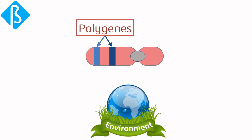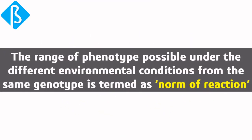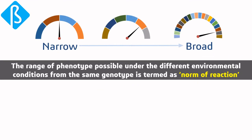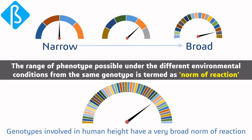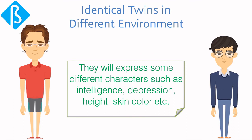The expression of polygenes is greatly influenced by environmental conditions. Genes function differently in different environments because the environment regulates the activity of certain genes, setting them on or off. The range of phenotypes possible from the same genotype under different environmental conditions is termed the norm of reaction — it is narrow for certain genotypes and broad for others. For example, genotypes involved in human height have a very broad norm of reaction, so identical twins raised in two different environments may express different characters such as intelligence, depression, height, or skin color.